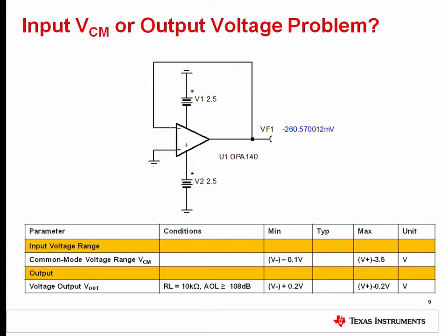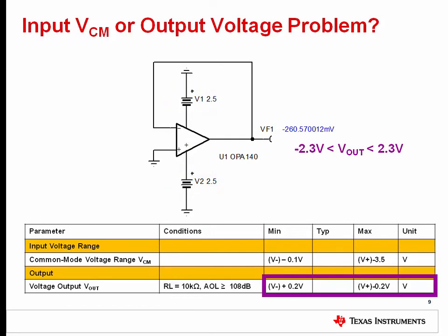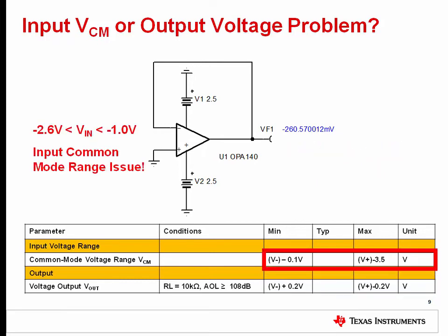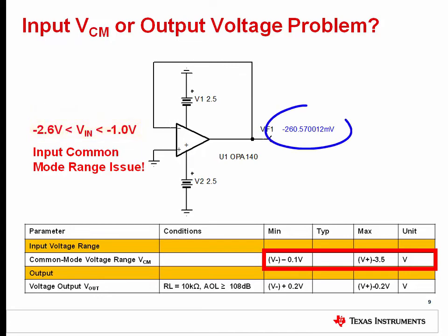Let's look at another example. This circuit has a different power supply arrangement where the supplies are plus or minus 2.5 volts. The output range is calculated to be from minus 2.3 to plus 2.3 volts. The amplifier wants to drive the output to 0 volts, and 0 is inside the output range, so there is no output voltage swing violation. However, the input common mode voltage range is now from minus 2.6 to minus 1 volts. The applied input common mode voltage is 0 volts, which is above that range — so we have a violation of the input common mode range. That is why we see hundreds of millivolts at the output rather than microvolts.